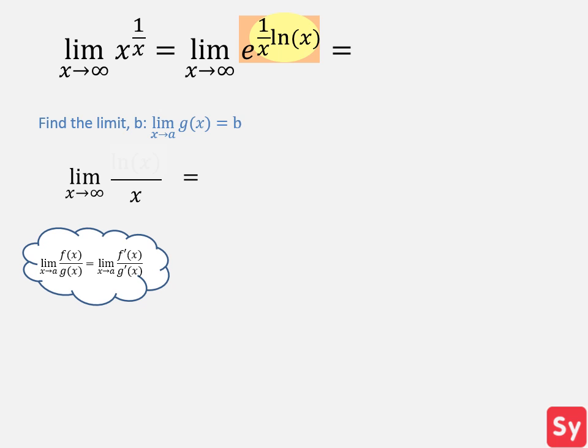We take the derivative of the numerator and get 1 over x. We take the derivative of the denominator and get 1. We simplify the function to 1 over x. Now we'll substitute infinity in for x. We get 0 as the limit.